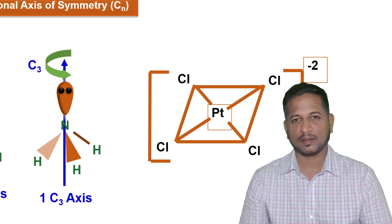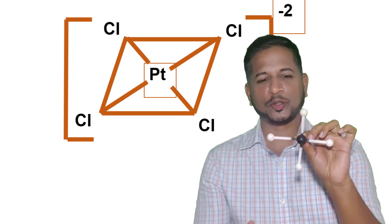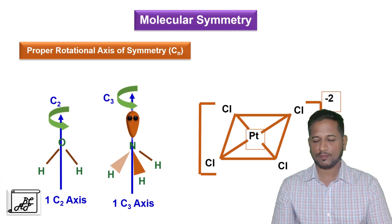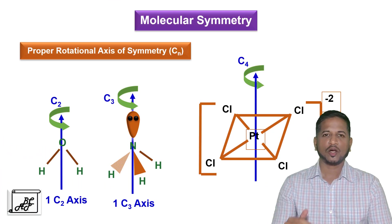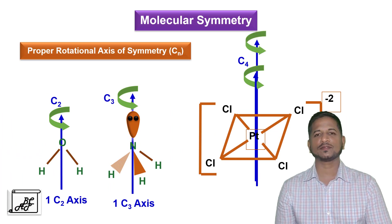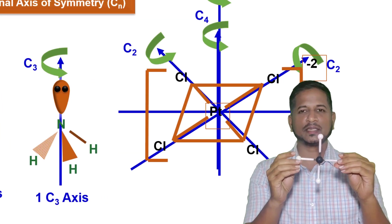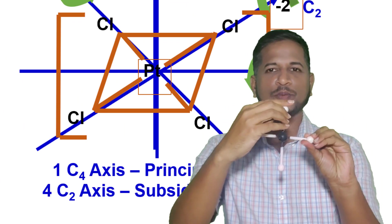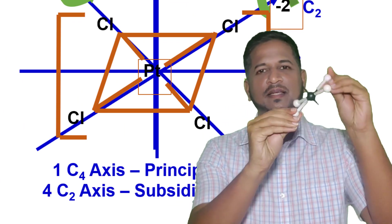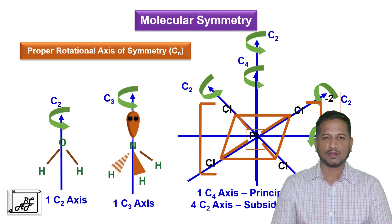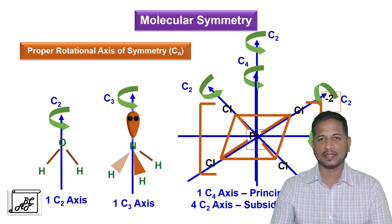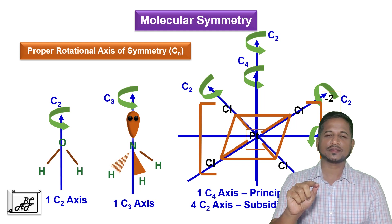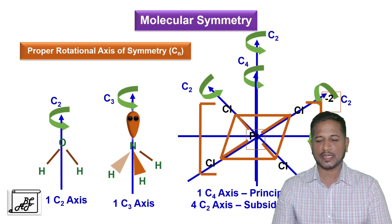The next example is platinum tetrachloride, which is a square planar molecule. After four rotations through 90 degrees, we get an identical image; therefore it has a C4 axis of symmetry. Along with C4, there are also four C2 axes of symmetry present in platinum tetrachloride — we can rotate the molecule in four different orientations through 180 degrees to get an identical image. So the C4 axis is the principal axis and the C2 axes are the subsidiary axes.